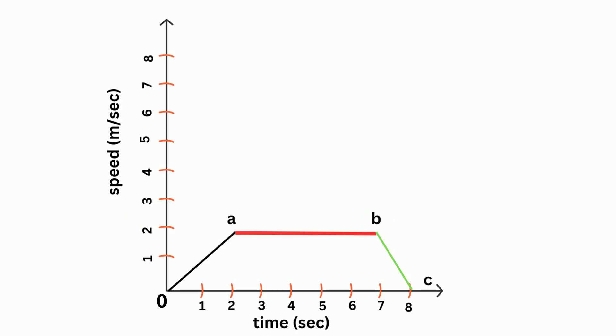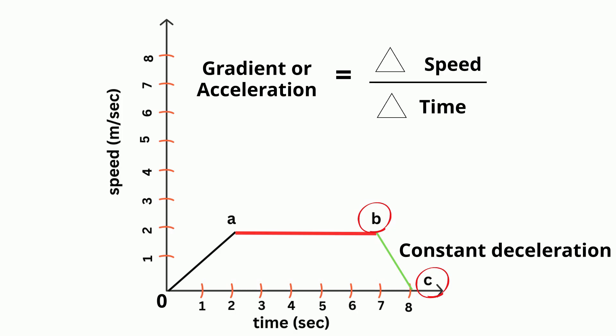Now from b to c, you have constant deceleration. Again, we can calculate the rate. It went from two to zero so it went negative two meters per second and it did this in one second. When you divide those, you have a negative two meter per second squared.